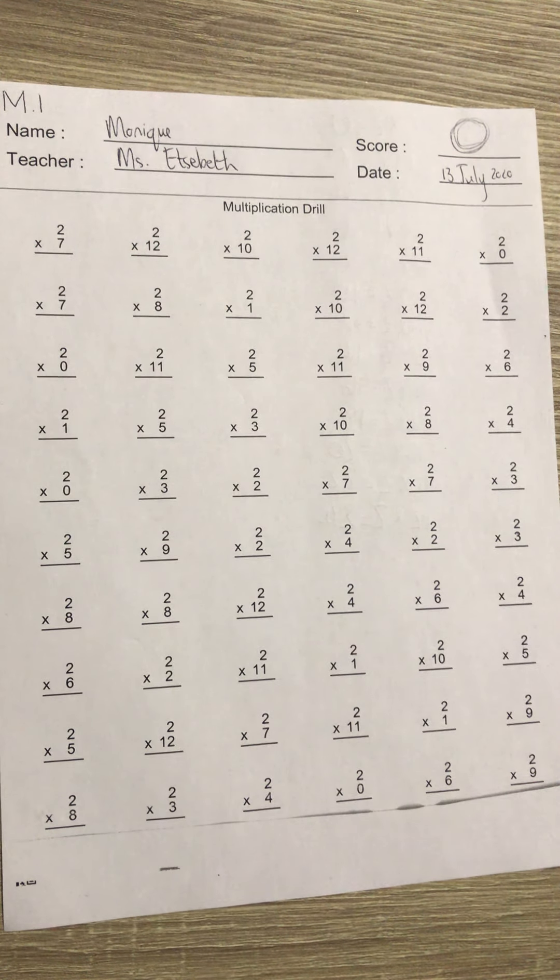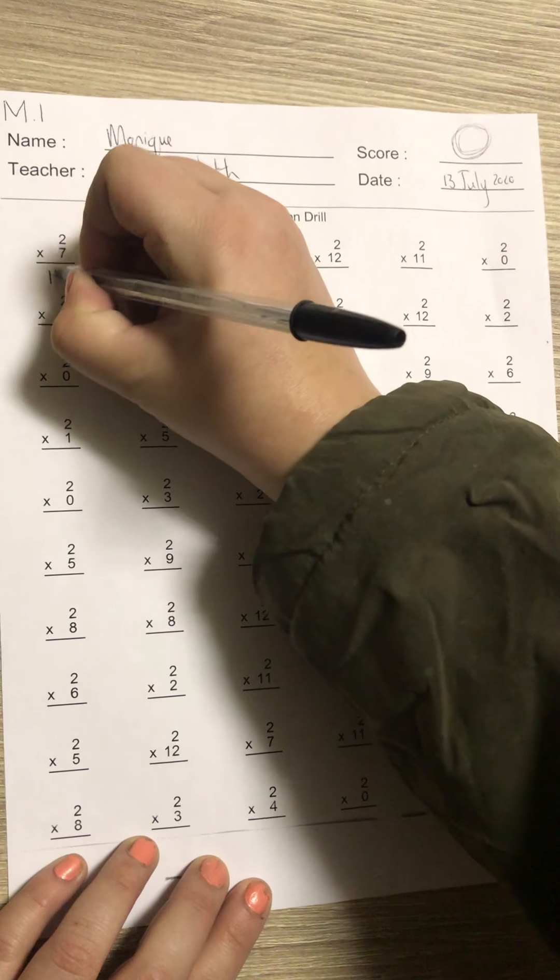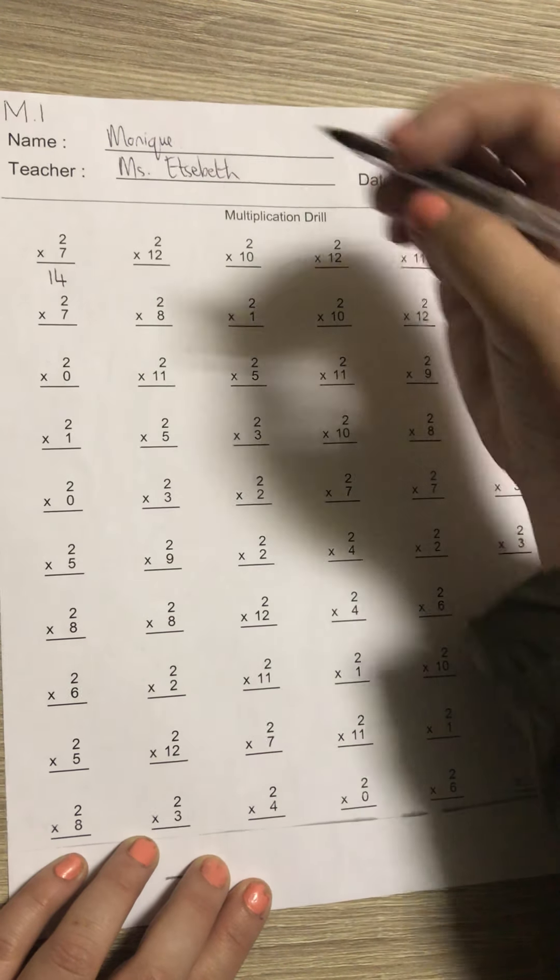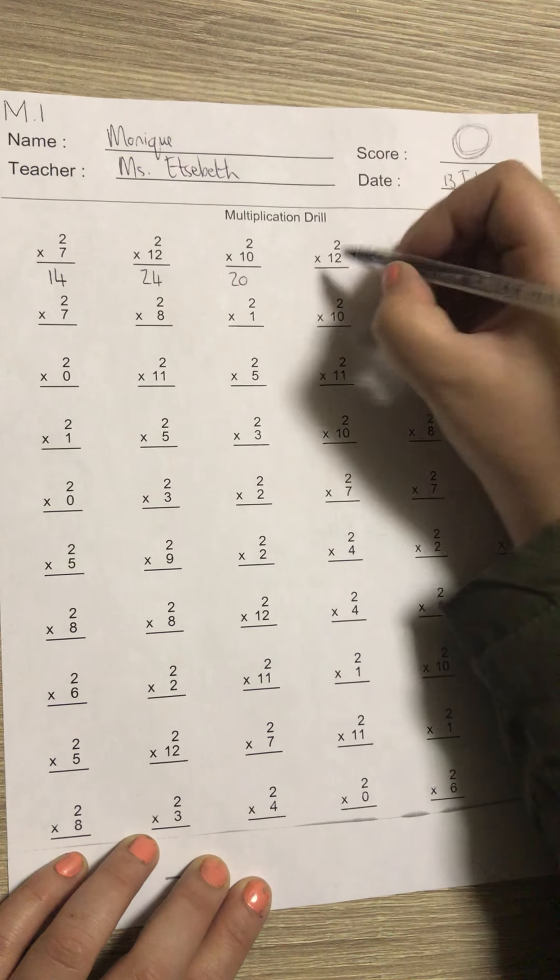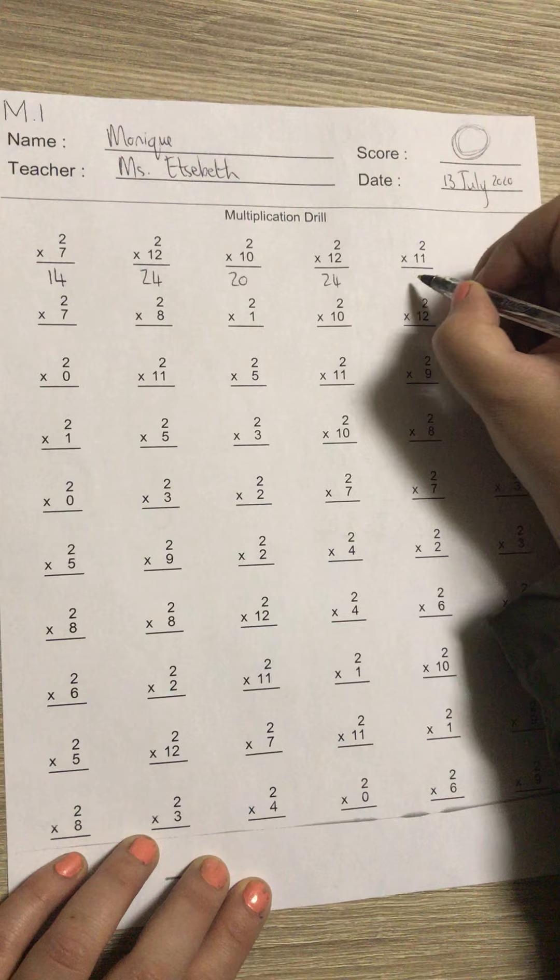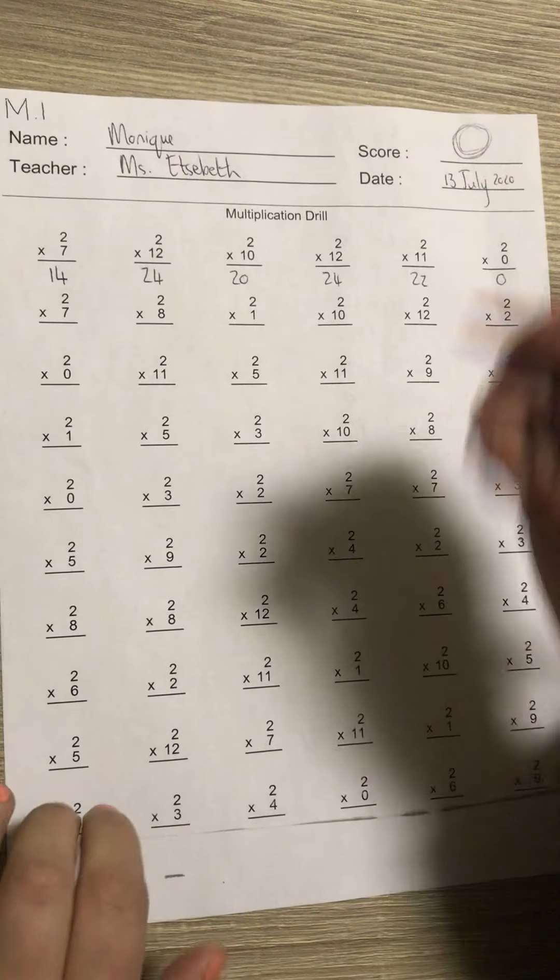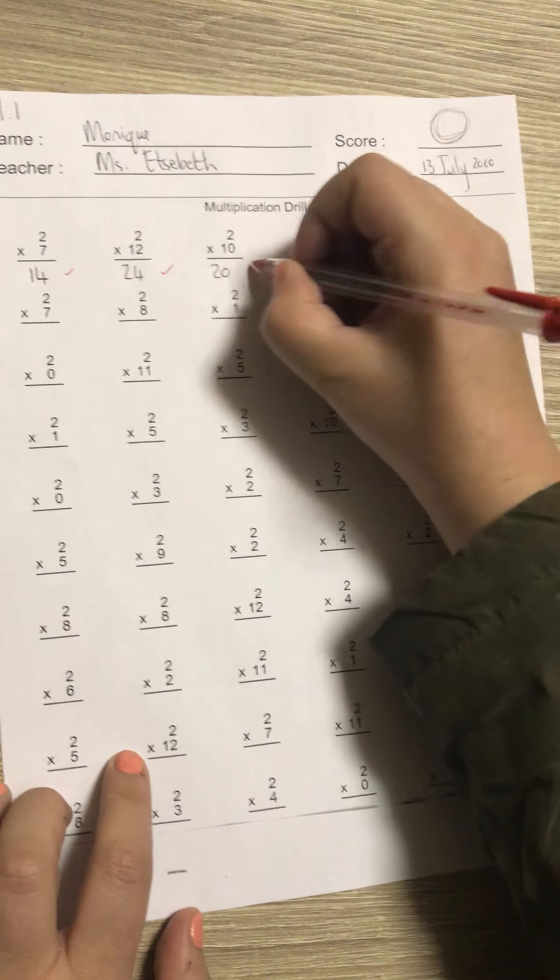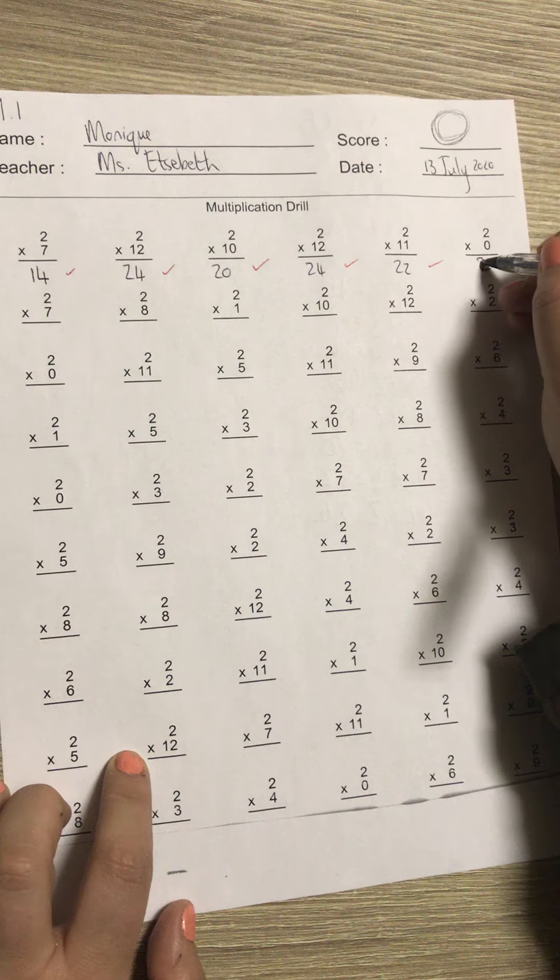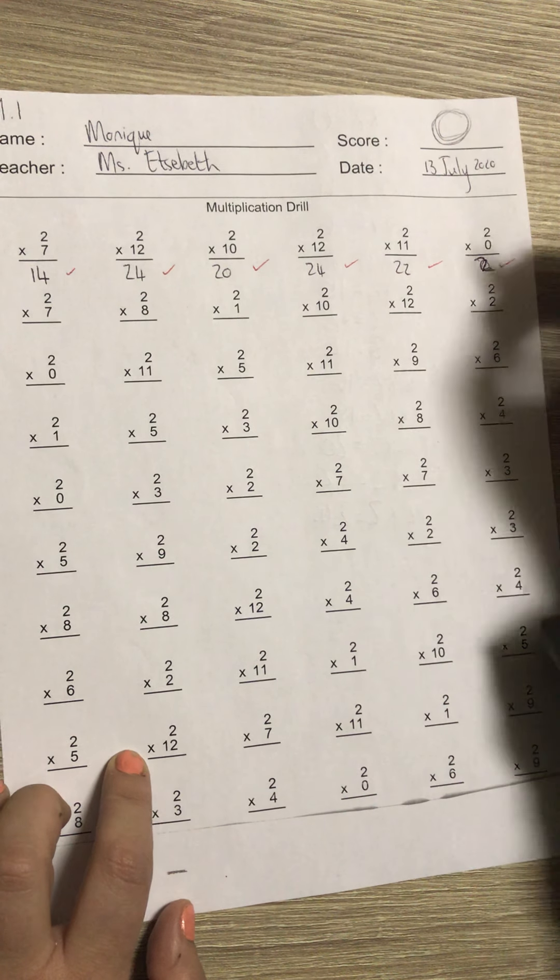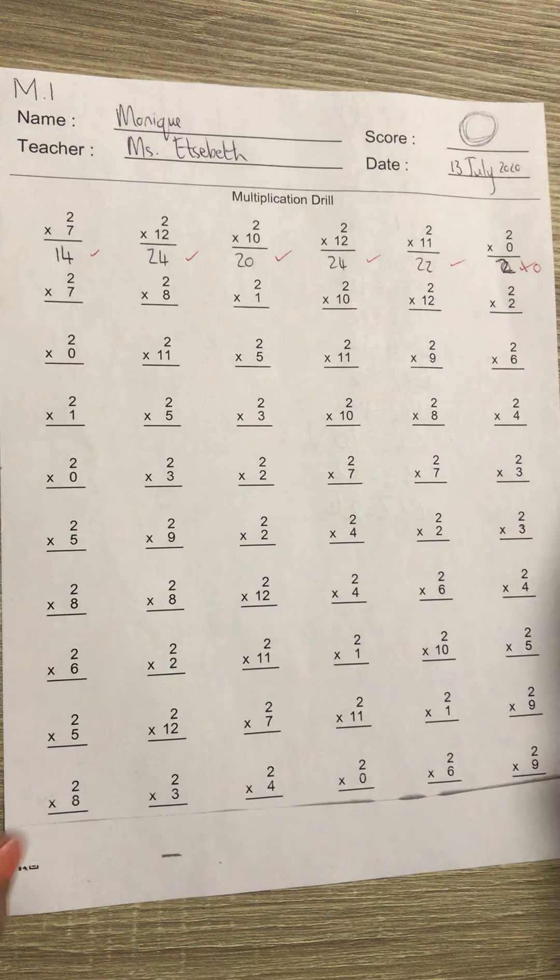Good. Read. Okay, I will fill it in but I'm just going to read. First one: two times seven is 14, two times 12 is 24, two times 10 is 20, two times 12 is 24, two times 11 is 22, two times zero is zero. So I want small, neat ticks, or if you wrote the wrong answer, cross it out and write the correct answer.